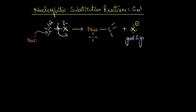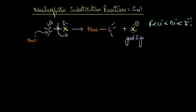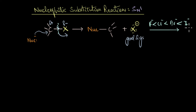The leaving group ability varies in the order F⁻ < Cl⁻ < Br⁻ < I⁻. As we go down the periodic table, atomic size increases, meaning the negative charge can disperse over a much larger volume. This is what makes iodide ions much more stable than fluoride ions.